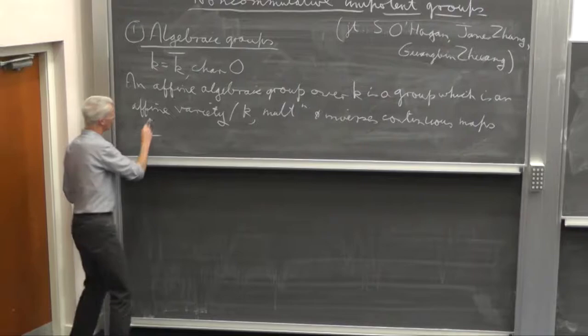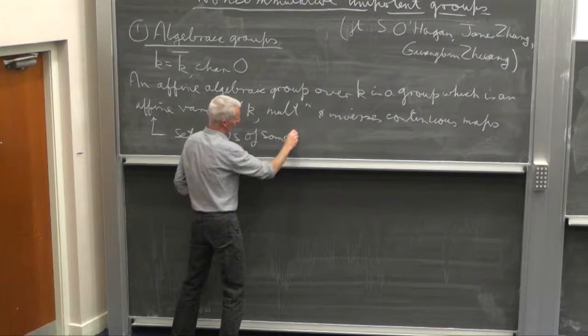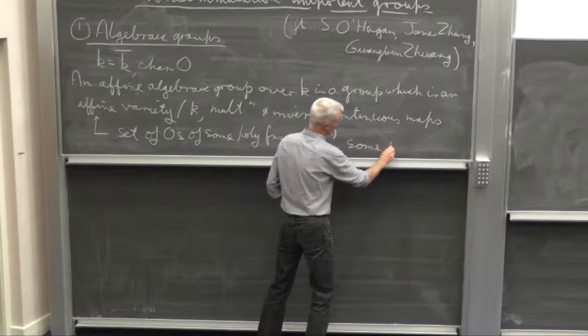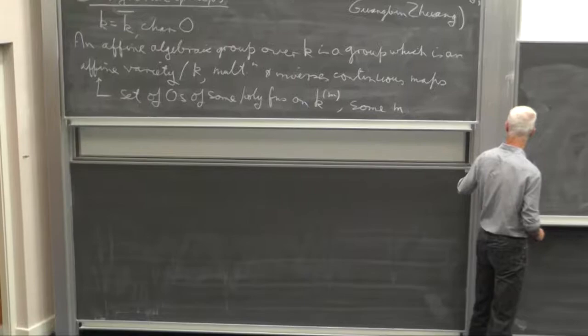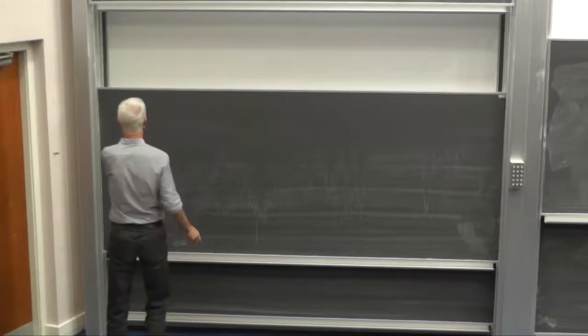An affine algebraic group over K is a group which is an affine variety, and the multiplication and the inverse formation are morphisms of the variety. And of course, an affine variety just means the set of zeros of some polynomial functions.